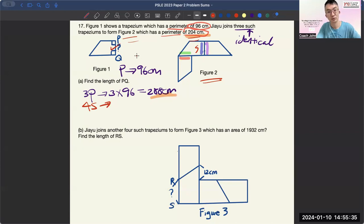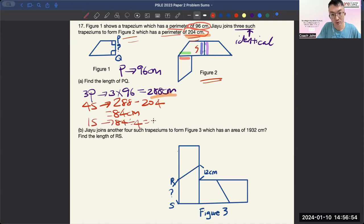So now we take 288 minus 204, which is 84 cm. Then 1S will be 84 divided by 4 to give you 21 cm. So that's the answer for your PQ. So PQ is actually 1S, which equals 21 cm.